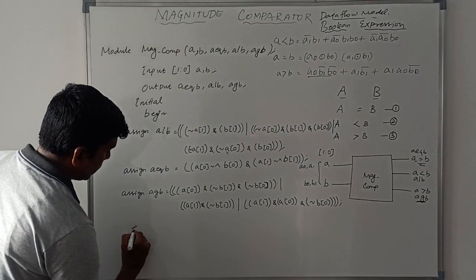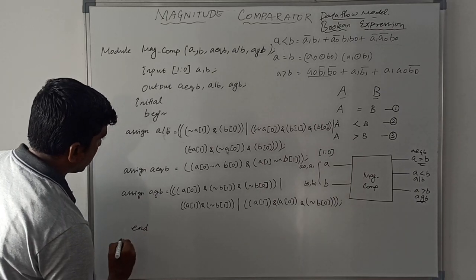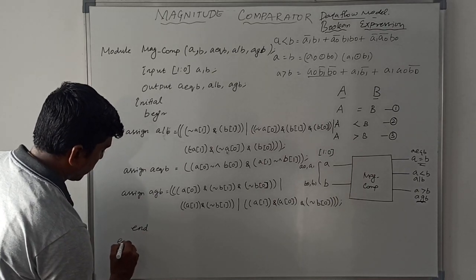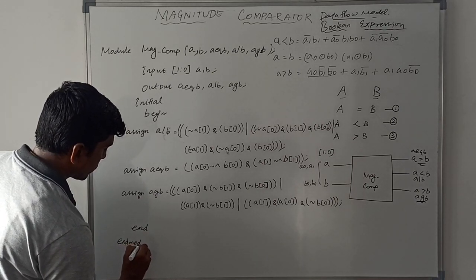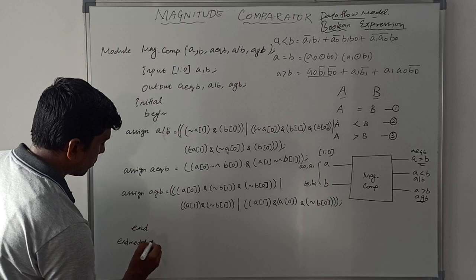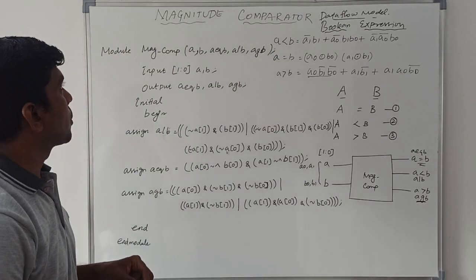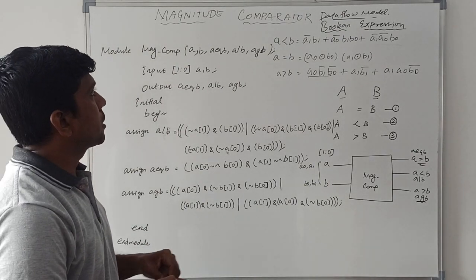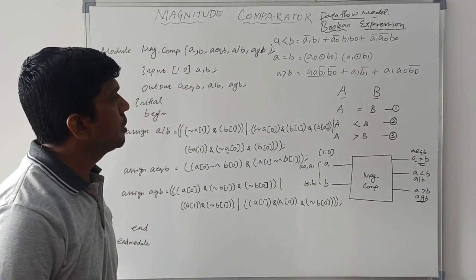Finally, write end and endmodule to close the module. This is the complete Verilog program for a magnitude comparator using the data flow model.